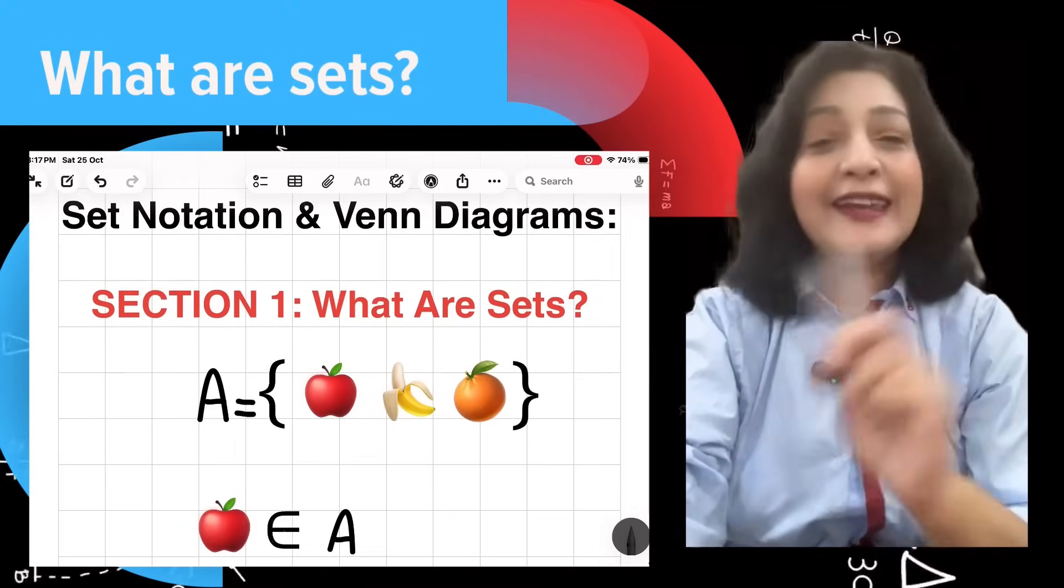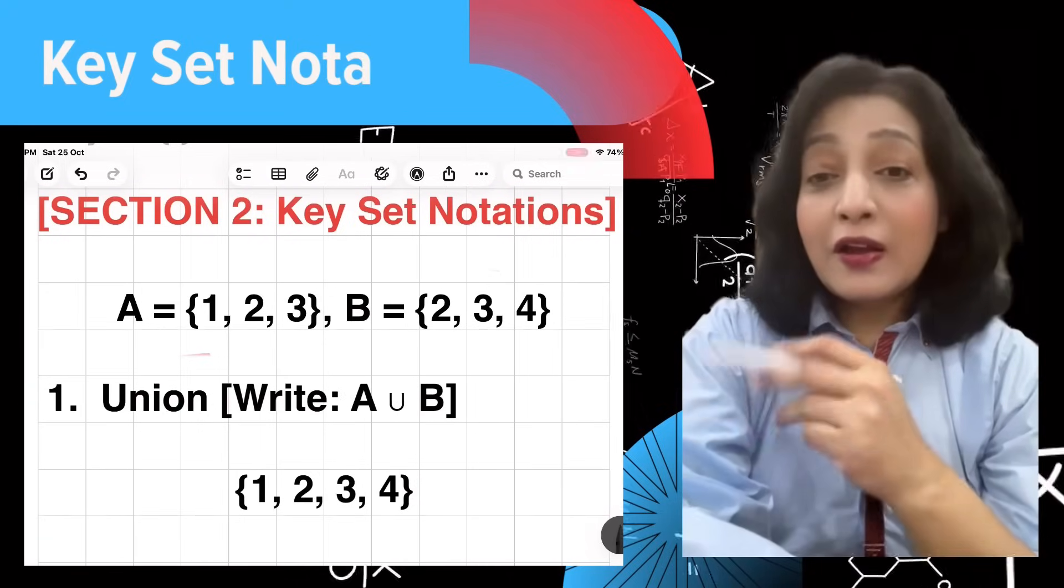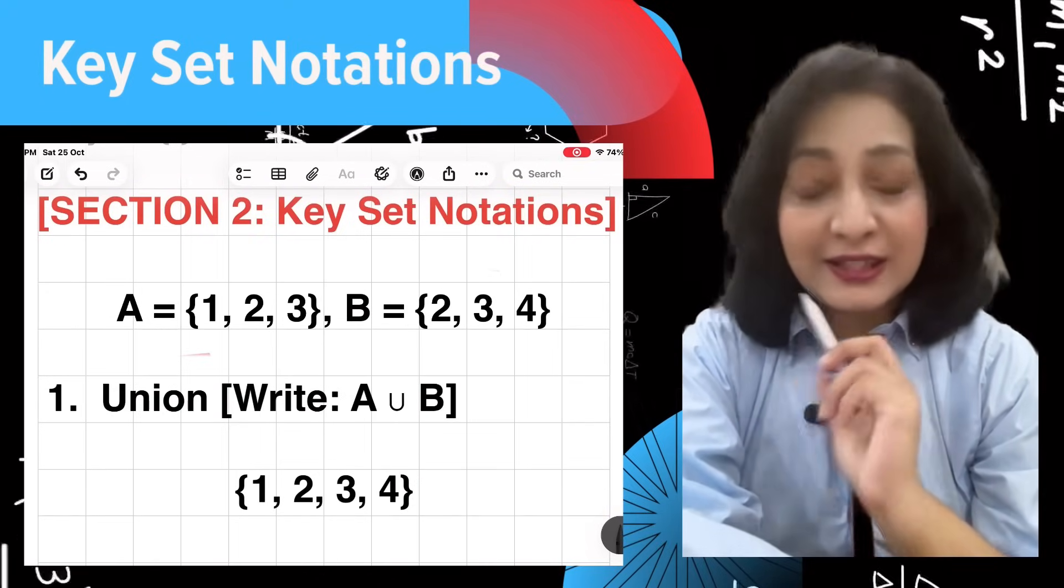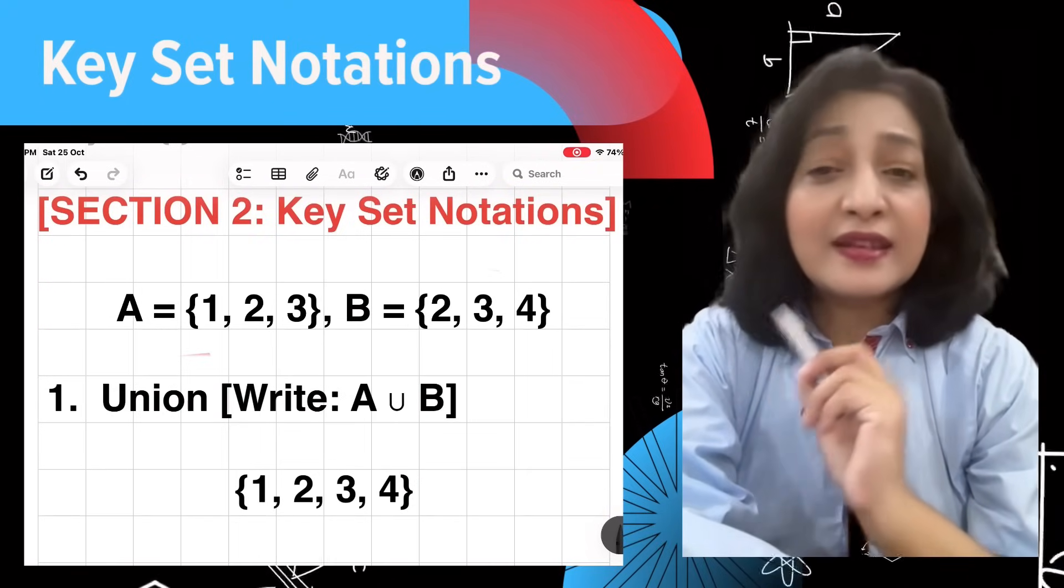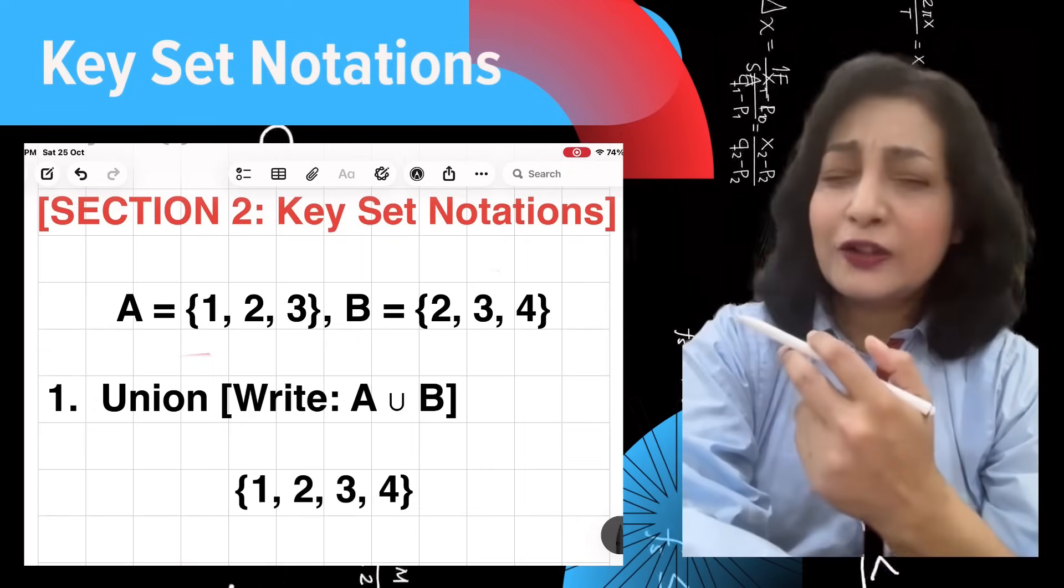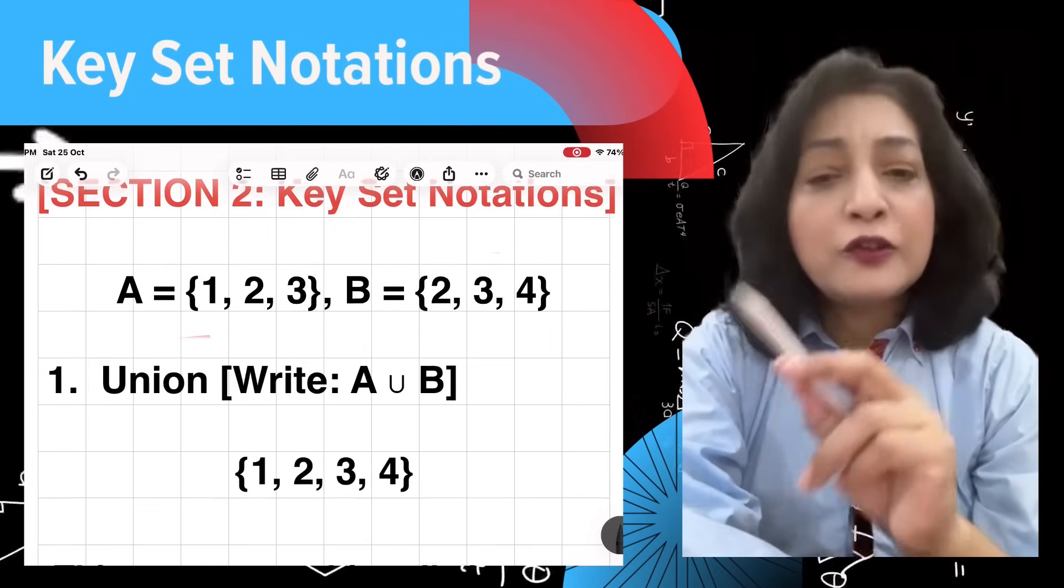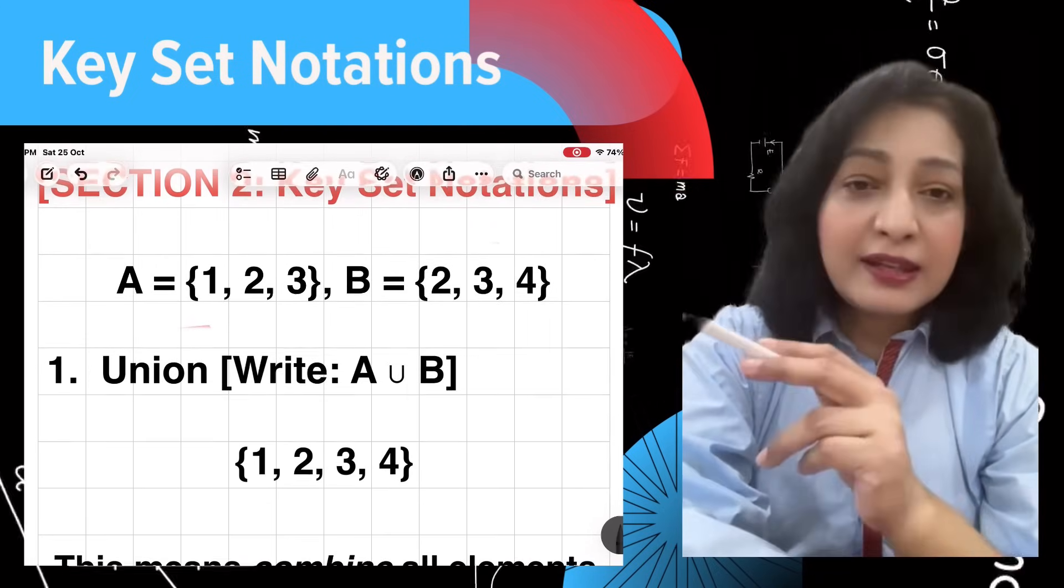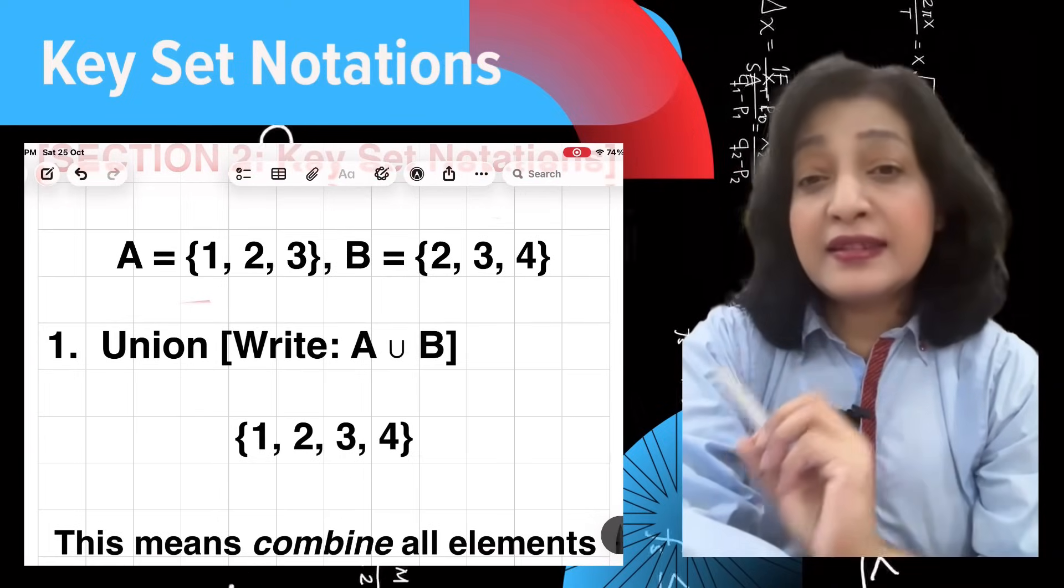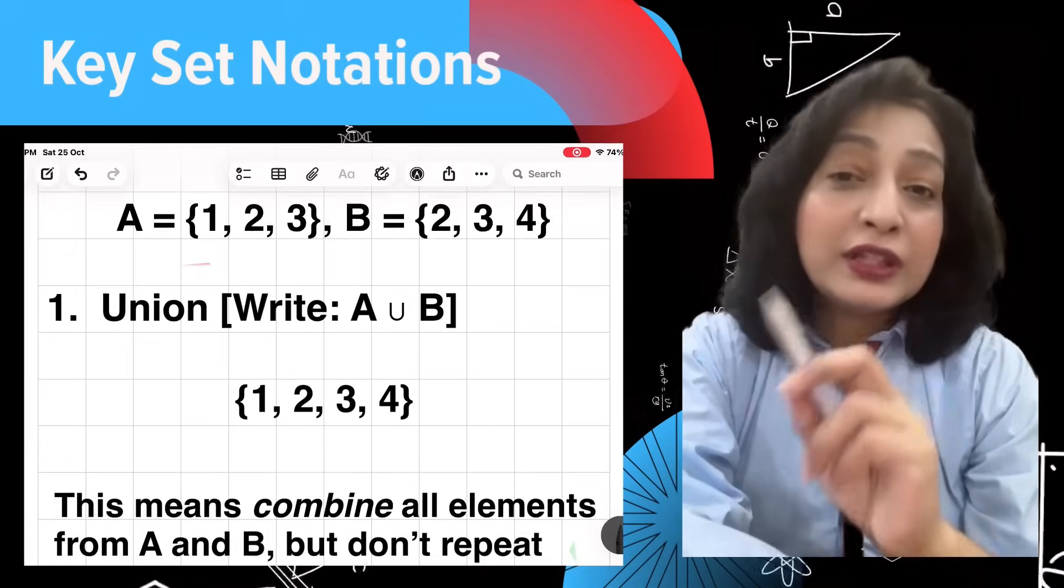Now section two: key set notations. Let's learn some key operations we can do with sets. Look at the screen. Draw two sets: A = {1, 2, 3} and B = {2, 3, 4}. Imagine set A has the elements 1, 2, 3, and set B has 2, 3, 4.